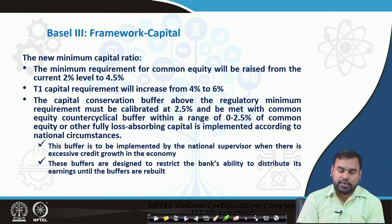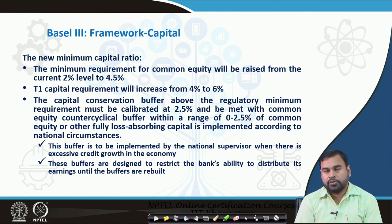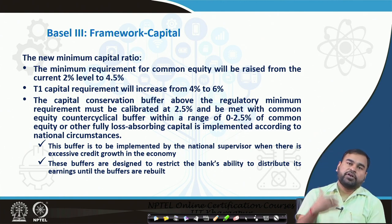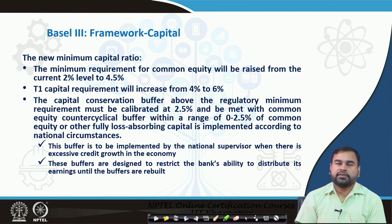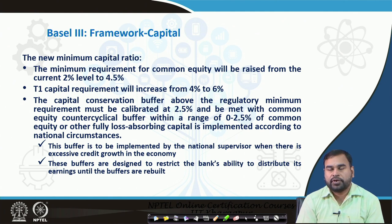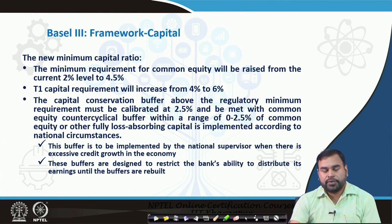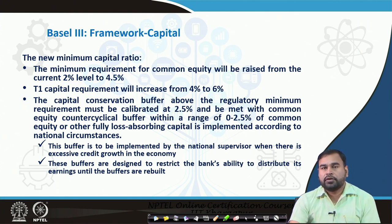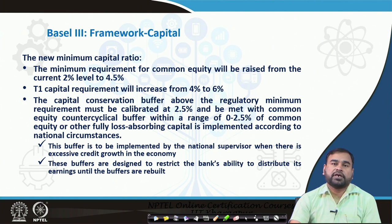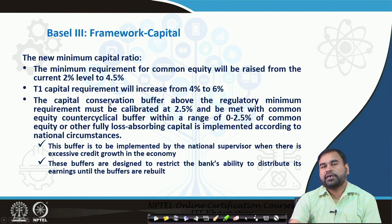The buffer is to be implemented by the national supervisor like the central bank when there is excessive credit growth in the economy. These buffers are designed to restrict the bank's ability to distribute its earnings until the buffers are rebuilt. That means unless the particular level of capital is maintained, there are restrictions on the distribution of earnings that the particular bank is making.